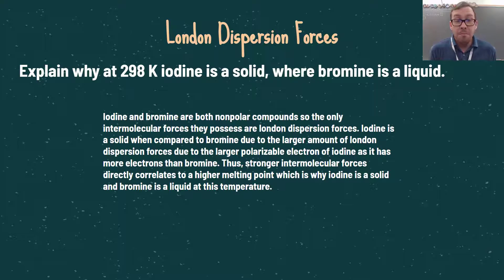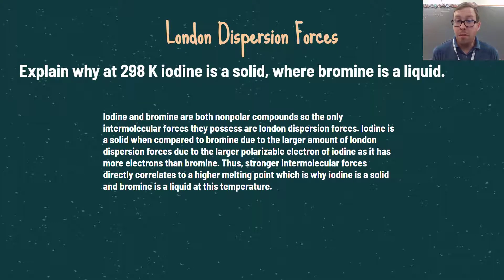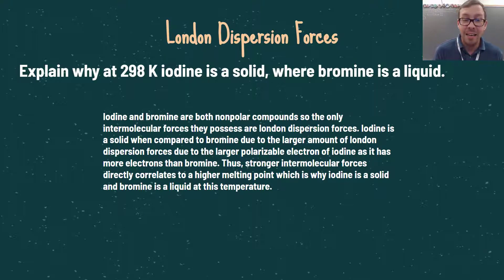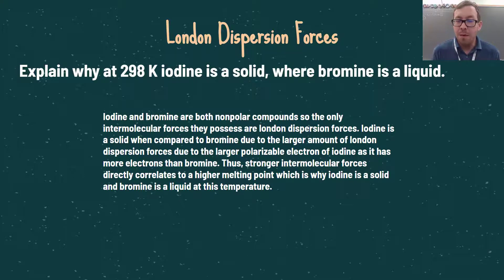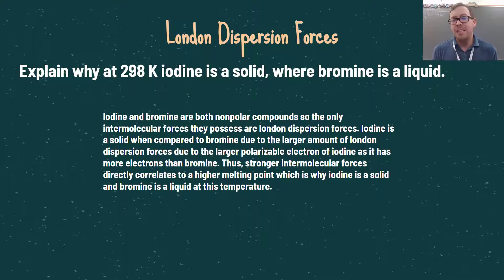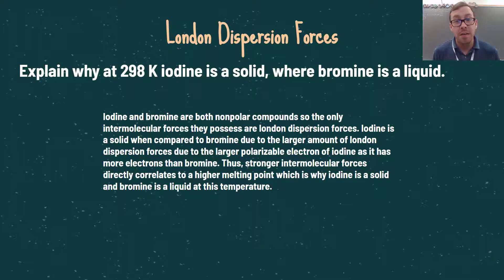Since iodine and bromine are both non-polar compounds, the only intermolecular forces they possess are London dispersion forces. Iodine is a solid compared to bromine's liquid state due to the larger amount of London dispersion forces from iodine's larger polarizable electron cloud, as it has more electrons than bromine. Stronger intermolecular forces directly correlate to a higher melting point, which is why iodine is a solid and bromine is a liquid at this temperature. It's not just important to identify which atoms have which intermolecular forces, but how that results in different chemical properties.